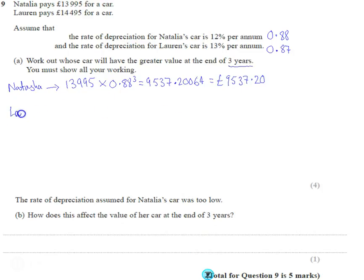If we do the same with Lauren's car, it started off worth more. This time we multiply by the multiplier, but her car loses more value per year, slightly. So we do that calculation, you get 9545.000985, which means her car is worth £9,545.00.